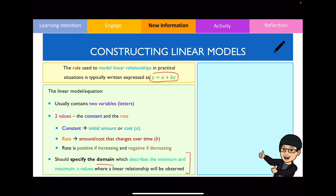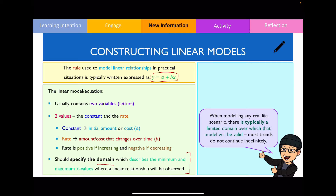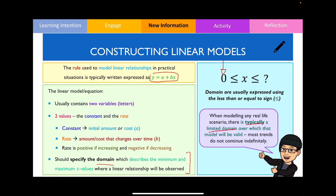The domain describes the minimum and maximum x values where you observe a linear relationship. We need to include it because a linear relationship between two variables will not always continuously occur. When modelling any real-life scenario, there is typically a limited domain over which the trend will be observed. For example, plants generally grow at a constant rate early on, but that growth will start to slow down, so we specify the domain where linear growth occurs between zero and a certain time.